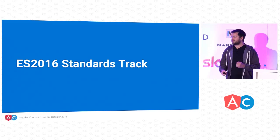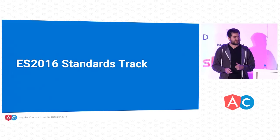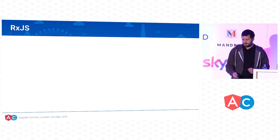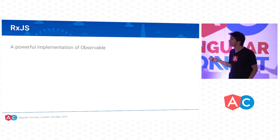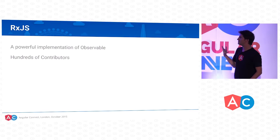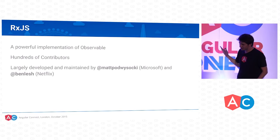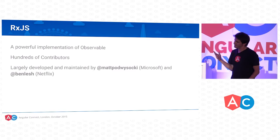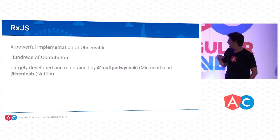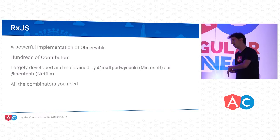Observables are on a standards track to be incorporated into the JavaScript language — they're in the ES2016 proposal at stage one or two. We're actually using RxJS in Angular already. It gives us the basic observable class plus a number of operators and combinators. The project has been around for five-plus years and the idea exists in many different languages. It's mainly maintained by Matt Podosicki and Ben Lesh from Netflix. We're using their latest version, RxJS 5, which is currently in alpha, and we're evolving Rx and Angular together.